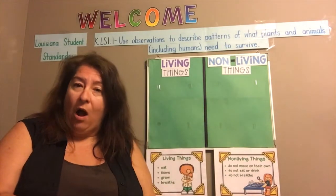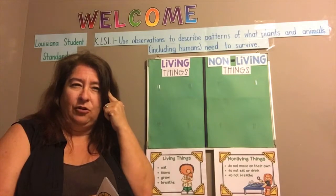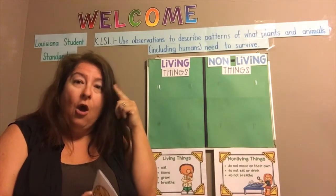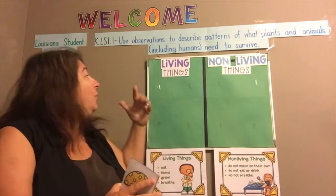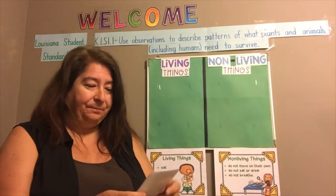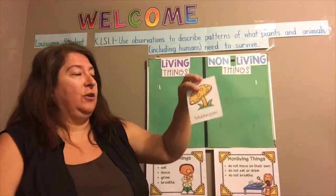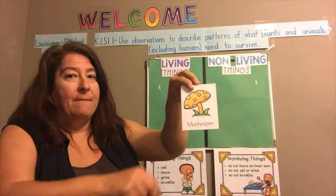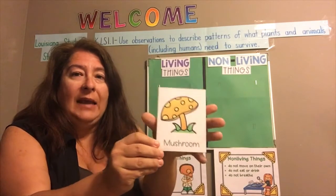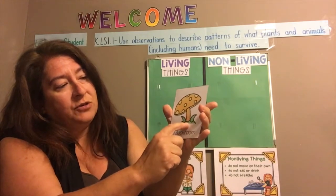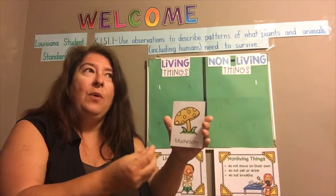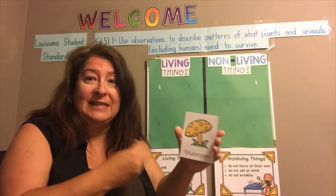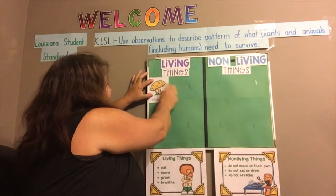I want you to listen and watch as I think aloud as I sort my pictures. I'm going to use my observations, or what I see and know, to sort the pictures. My first picture is a mushroom. I can see that a mushroom is growing in the ground, and if a mushroom starts little and grows bigger and bigger, it must be getting food and nutrients from the soil. So from those observations, I'm going to say that a mushroom is a living thing.